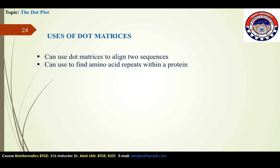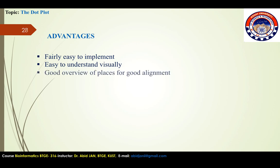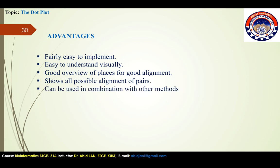Advantages: fairly easy to implement and easy to understand visually. It provides a good overview of places for good alignment, shows all possible alignment of pairs, and can be used in combination with other methods. It readily reveals the presence of insertions, deletions, and direct and inverted repeats that are more difficult to find by other more automated methods.